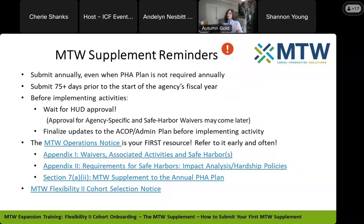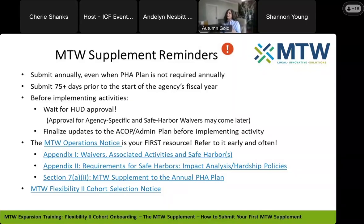The PHA plan goes either directly to your field office or through the portal, and the supplement goes to the online system in HIP. We know that's not ideal at this time — we're working on it, and we'll discuss the online system more later. Be sure not to submit the MTW Supplement until you submit your PHA plan. Always submit the supplement no later than 75 days prior to the agency's fiscal year, just like you do with the PHA plan. For this first submission year, there are two options: you can submit your next PHA plan on its due date with the supplement, or if you have an existing PHA plan in place, you can do an amendment to that plan and include your supplement, which means going back out to public comment for both.